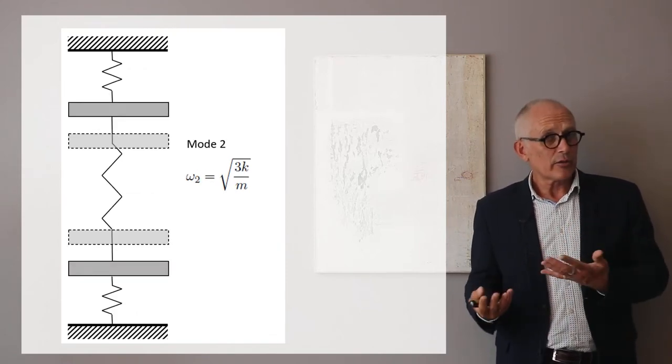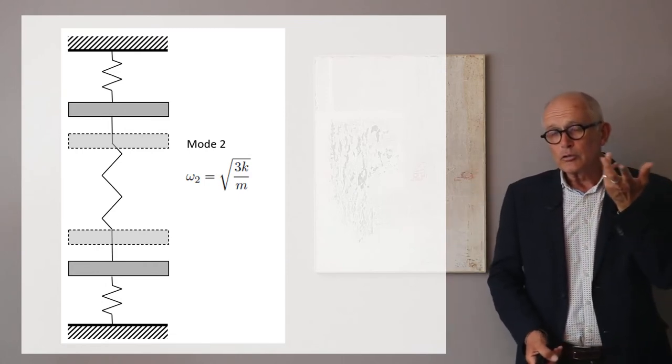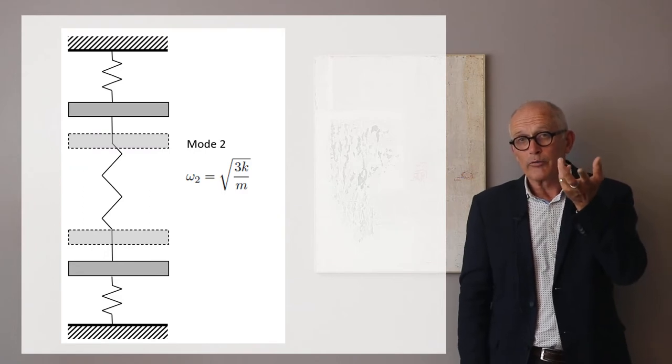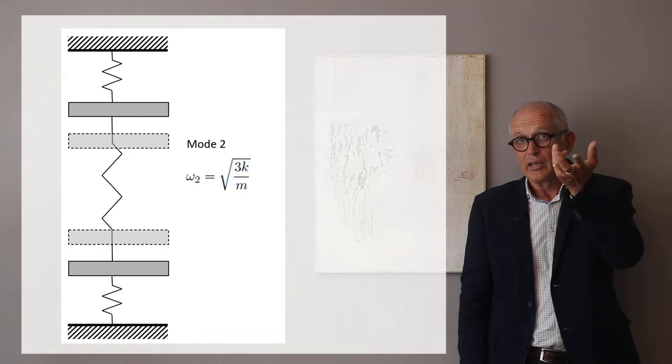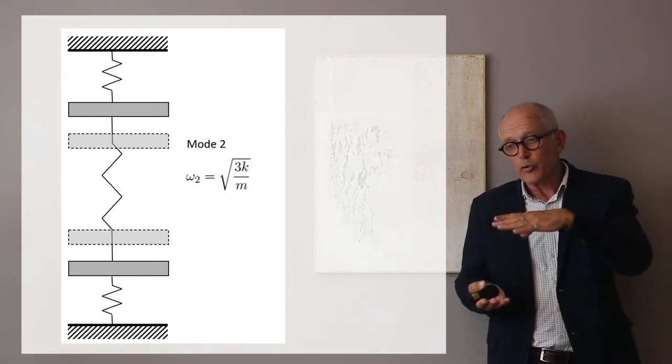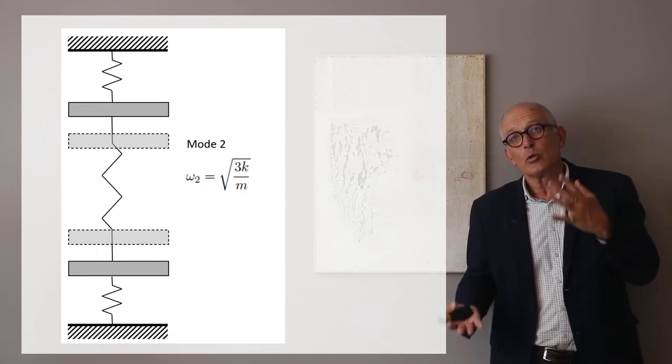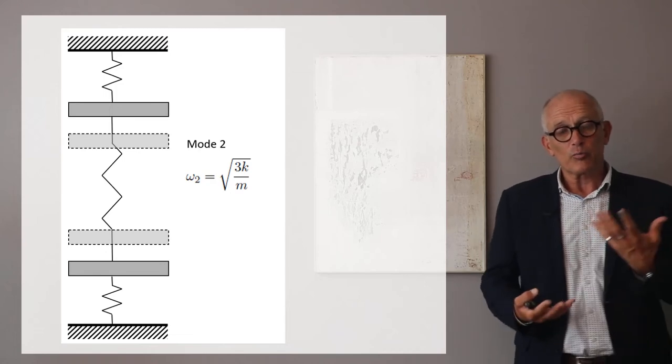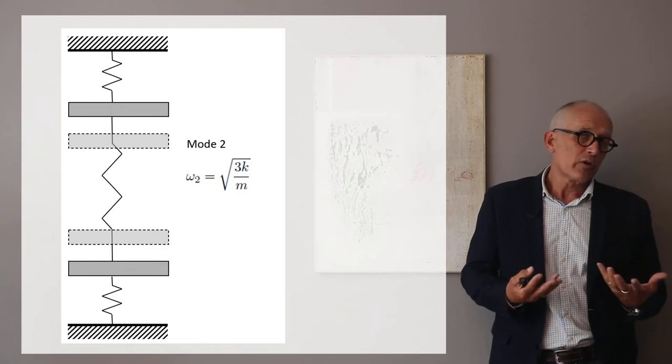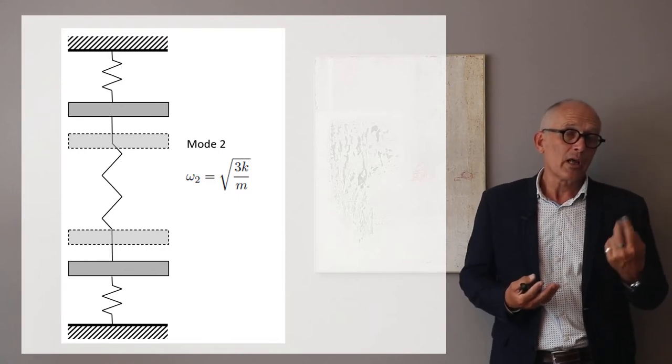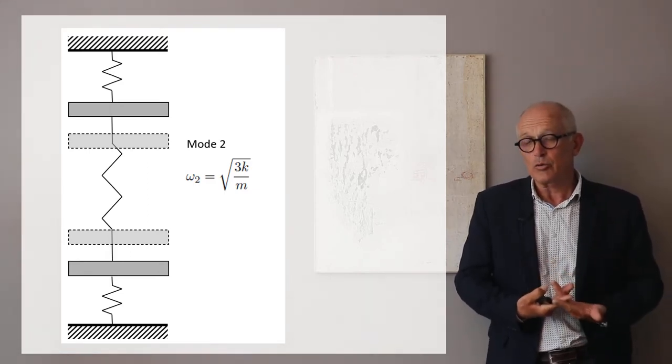If we look at the second mode, where the two masses are moving out of phase, and if you look at the system from the point of view of a single mass, you see that it is connected to a spring k to the ground. But the second spring, whenever you move one mass, you also move the other, so the actual spring stiffness of the second spring, the spring in between, is 2k. So everything happens as if each mass was connected to two springs, one with stiffness k, one with stiffness 2k, and so the total stiffness is 3k, and the resonance frequency is square root of 3k over m.